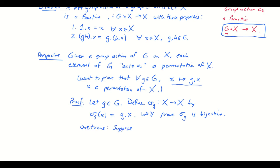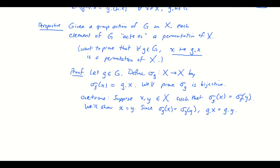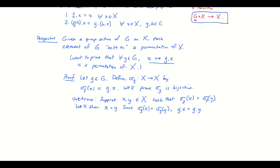let's suppose x and y are in X such that sigma_g(x) equals sigma_g(y). Well, since we know sigma_g(x) equals sigma_g(y), that means g·x produces the same result as g·y. But now I can use the fact that I have these composition rules for group actions. So I'm going to take each side of this equation here and act on each side with g inverse. So g^(-1)·(g·x) has to be the same as g^(-1)·(g·y).